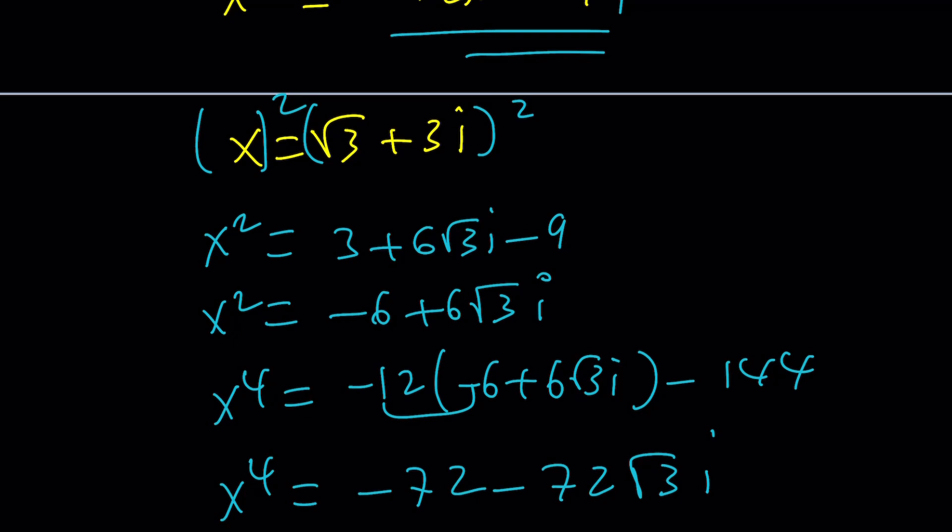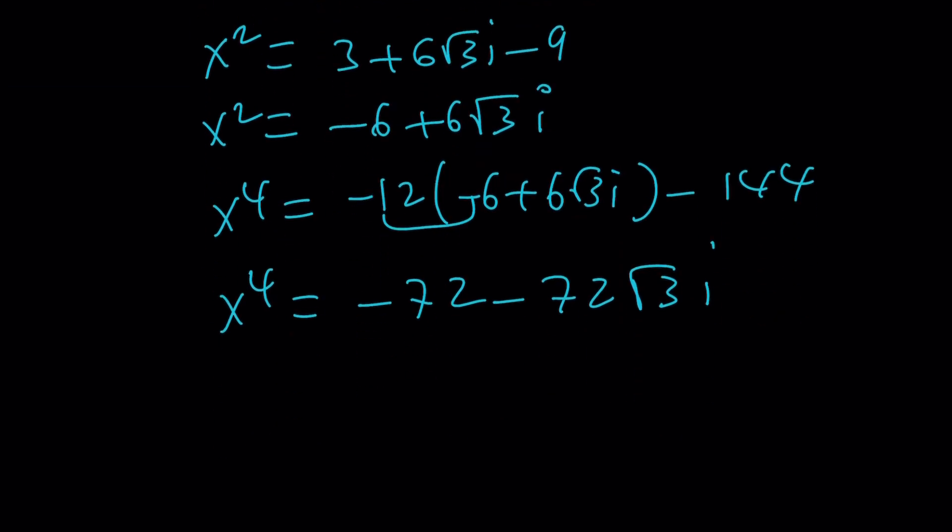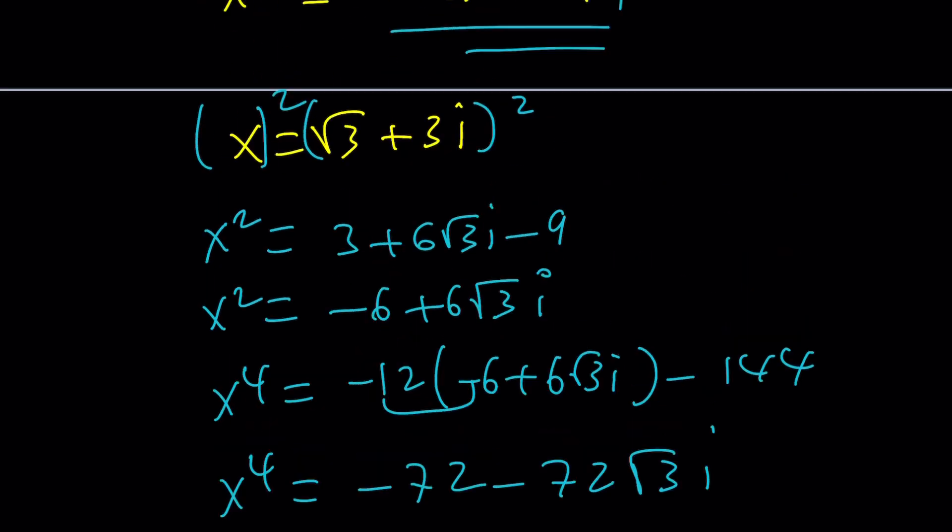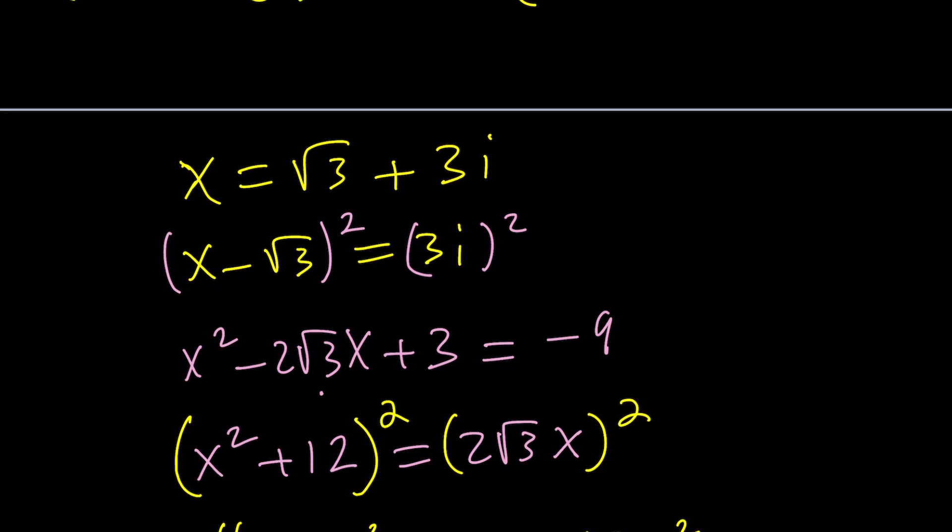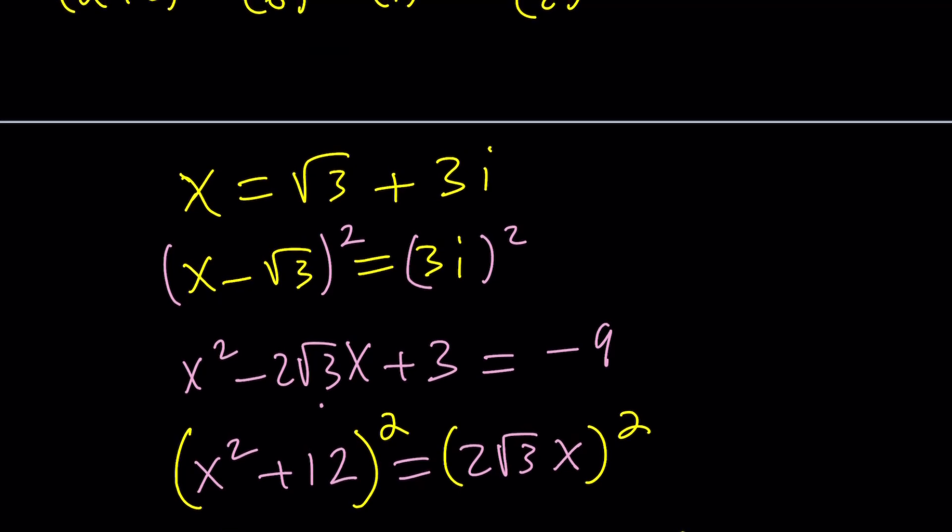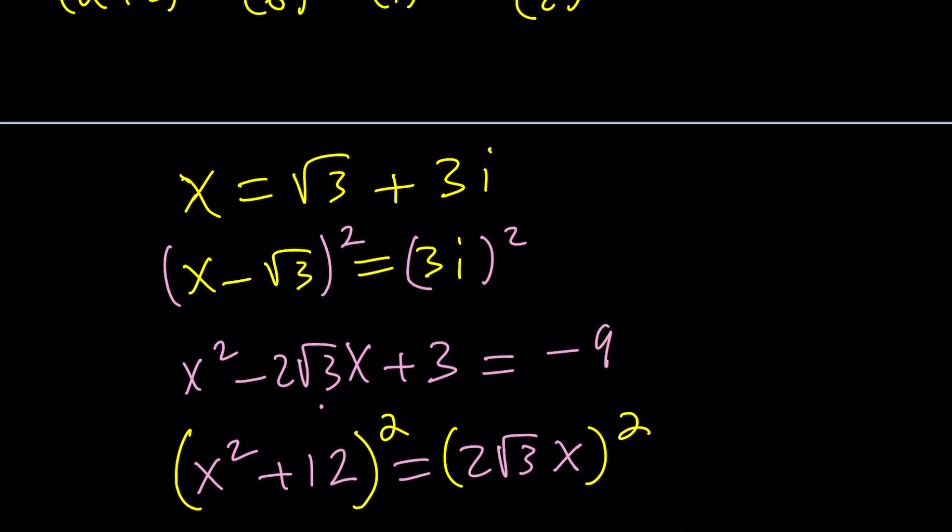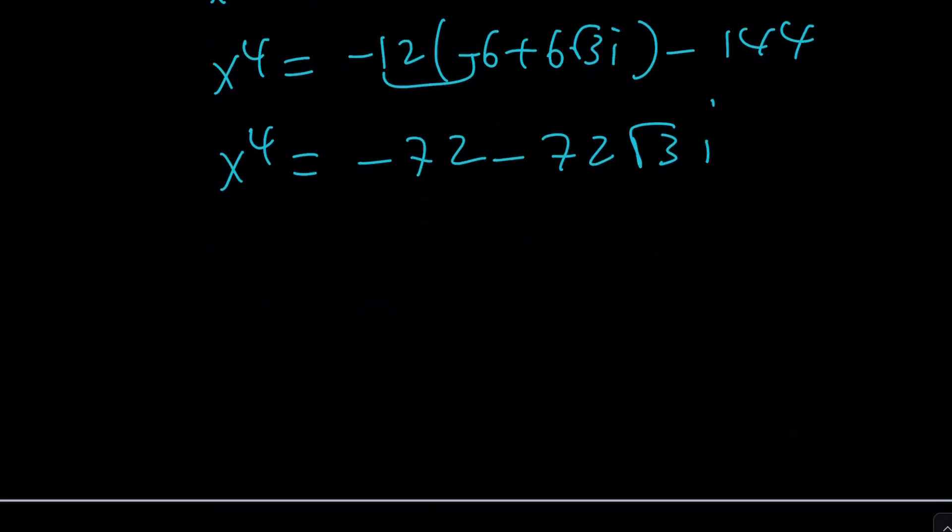So I started off with root 3 plus 3i, and now I got this. How is that helpful? I can try to raise this to the 3rd power, but that's going to be a lot of work. There's probably an easier way to do this, but I didn't really get anything that helpful. Let's go with the next method. x equals root 3 plus 3i, and I want to find x to the power 12 from here.